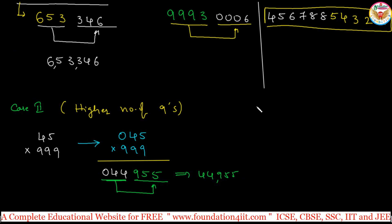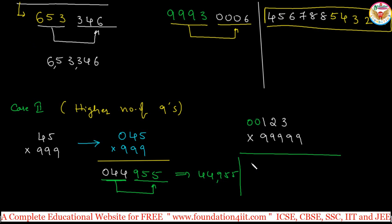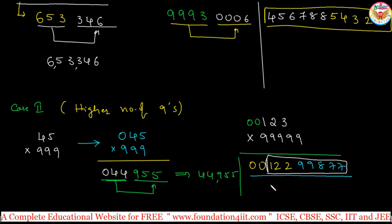One more Case 2 example: 123 multiplied by 99999 — five 9s. Add two zeros before to make it 00123. Subtract 1 to get 00122. Then subtract each digit from 9: 9 minus 0 is 9, 9 minus 0 is 9, 9 minus 1 is 8, 9 minus 2 is 7, 9 minus 2 is 7. So the answer is 0012299877, which is 12299877. That completes Case 2.